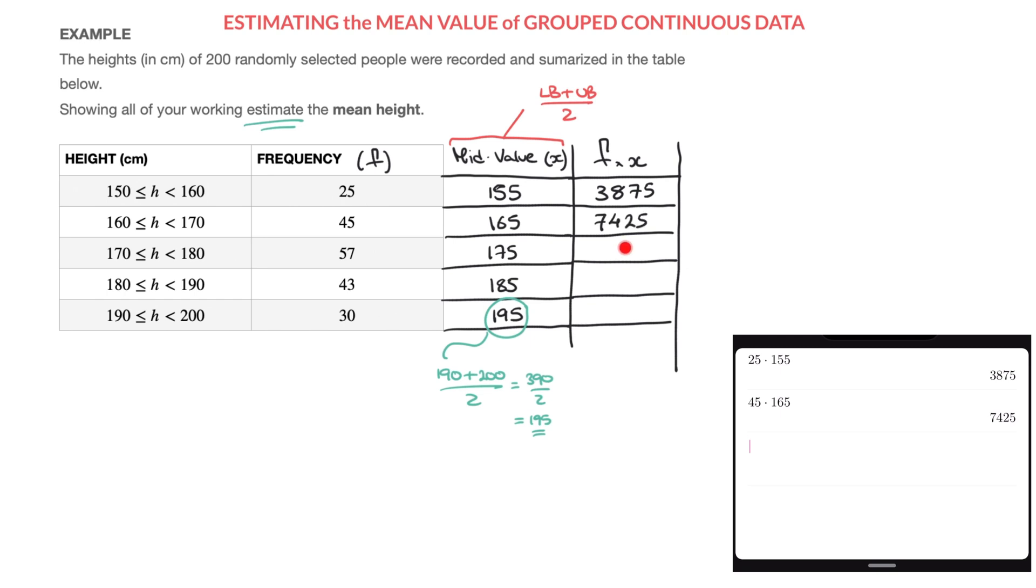I carry on to the next cell, so that's going to be 57 times 175. So that's 57 times 175, which equals 9975, so I write that, that's 9975. And I carry on.